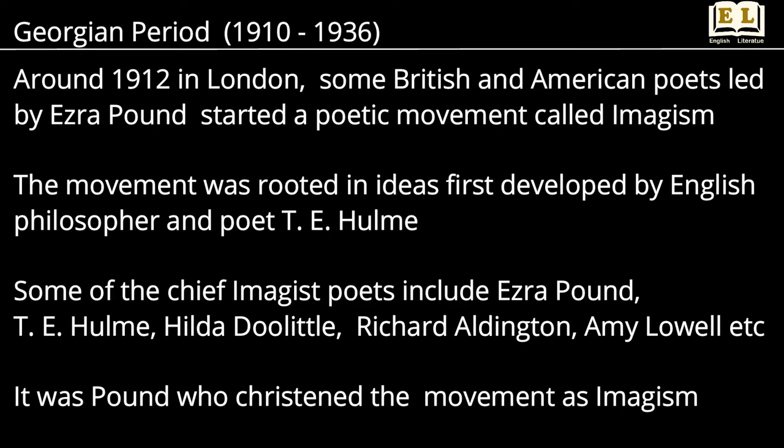Around 1912 in London, some British and American poets led by Ezra Pound started a poetic movement called Imagism. The movement was rooted in ideas first developed by English philosopher and poet T.E. Hulme. Some of the chief Imagist poets include Ezra Pound, T.E. Hulme, Hilda Doolittle, Richard Aldington, Amy Lowell, etc. It was Pound who christened the movement as Imagism.